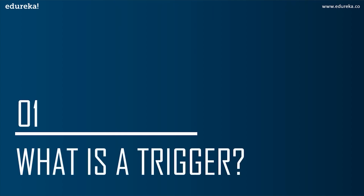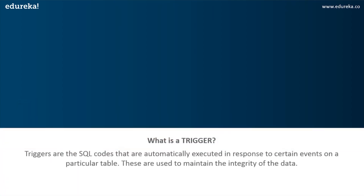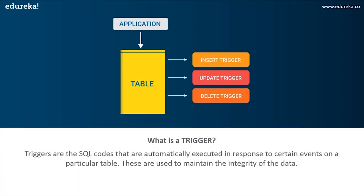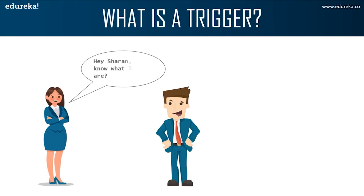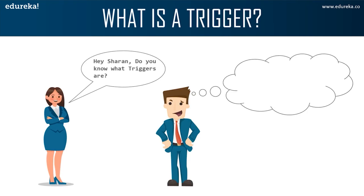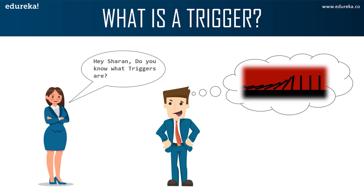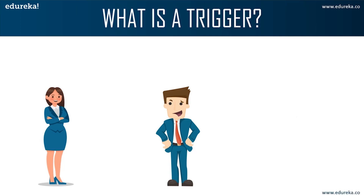The first topic in today's discussion is: what are triggers? Triggers are SQL code that are automatically executed in response to certain events on a particular table. These are used to maintain the integrity of the data in a given table. A trigger in SQL works similar to a real-world trigger. Here we can see Anna is asking Sharon about triggers, and Sharon imagines a trigger as falling dominoes.